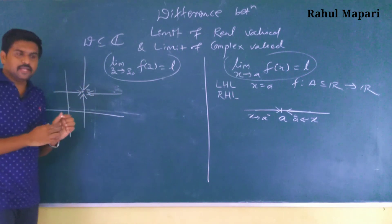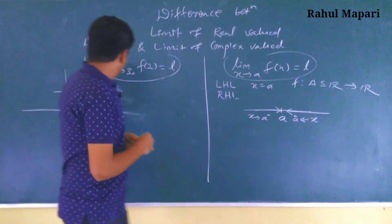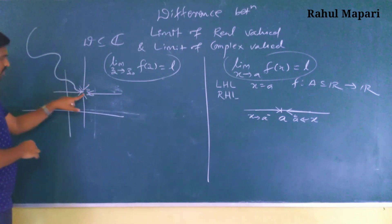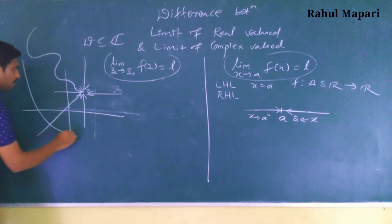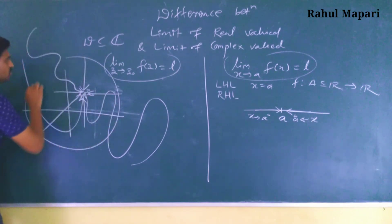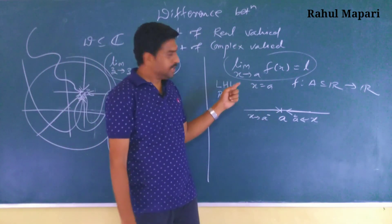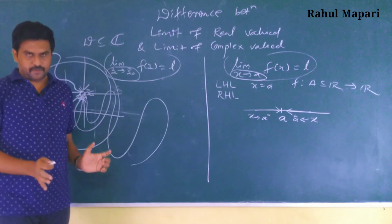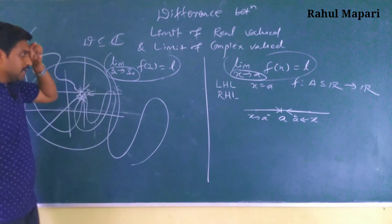On the complex plane we can draw infinitely many curves and paths to approach a particular point z₀. Maybe z approaches z₀ from this path, or from this path, or from this path — there are infinitely many possibilities. So the symbol x tends to a on the real line and z tends to z₀ on the complex plane have a big difference: here we have only two paths, but here we have infinitely many paths.